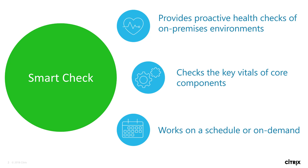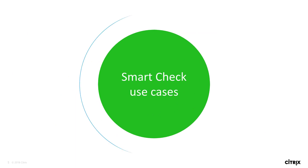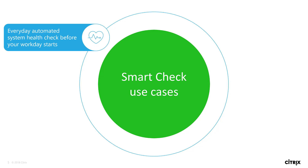And it works when you want it to work, on a regular schedule or on-demand as needed. You can use SmartCheck as a simple and effective way to save time, money, and to give you peace of mind. Using its scheduling capabilities, SmartCheck can perform an everyday automated system health check before your workday starts, giving you the peace of mind that all is okay.